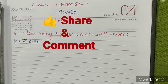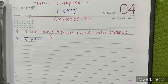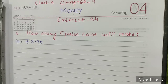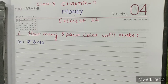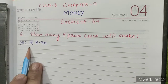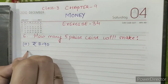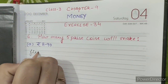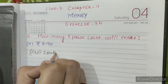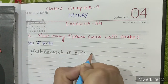Hello students, welcome back to a new video session. This video is for Class 3, Chapter 9, Money, Exercise 34, Question number 6: How many 5 paise coins will make Rupees 8.90? So first, we will convert Rupees 8.90 into paise.